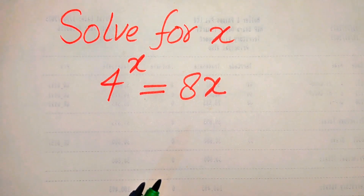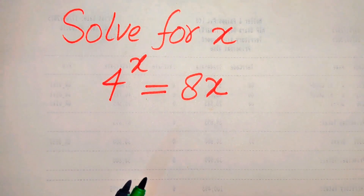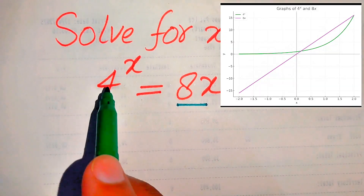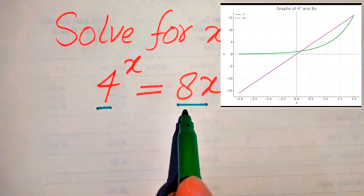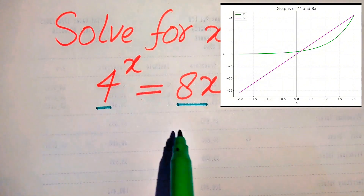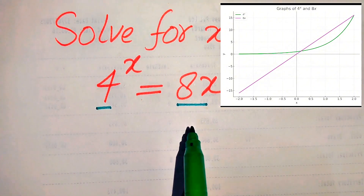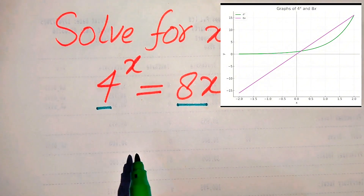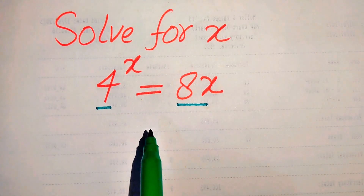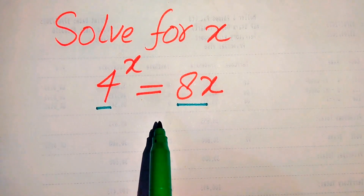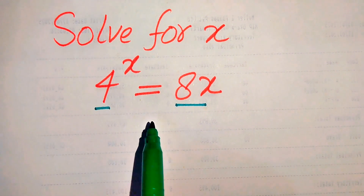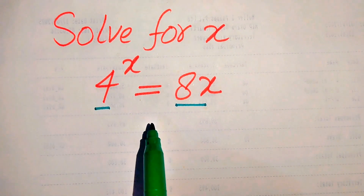The very first thing — you can see the graph of both of these functions, 4 to the power of x and 8x, on screen. The graphs of both of these functions intersect at two points, which means that these two points are the solutions of this problem. At the end we will find those two points.